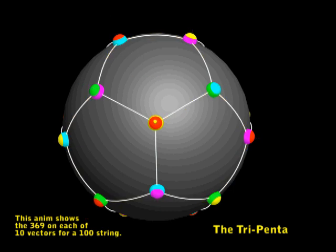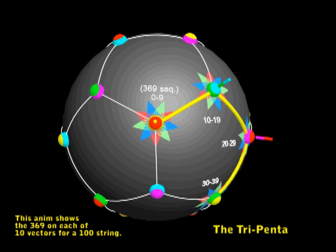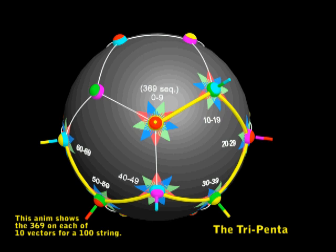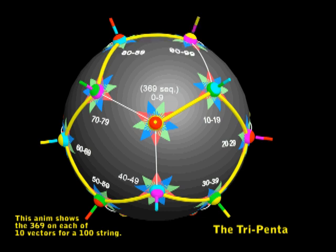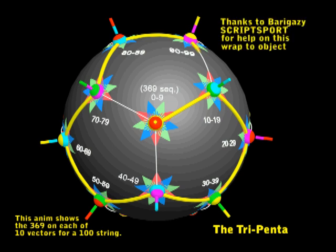Now we've put a little animation together, and you can see the little icons of the 369. We'll start with the red and yellow center, and that will give us a 0 to 9 sequence. The next one is going to give us 10 to 19, then 20 to 29, 30 to 39, then 40 to 49, then 50 to 59, then 60 to 69, then 70 to 79, then 80 to 89, and finally we get 90 to 99, which is our 10 vectors. I'd like to thank Barghazi on Scriptspot for his help with Raptor Object modifier.